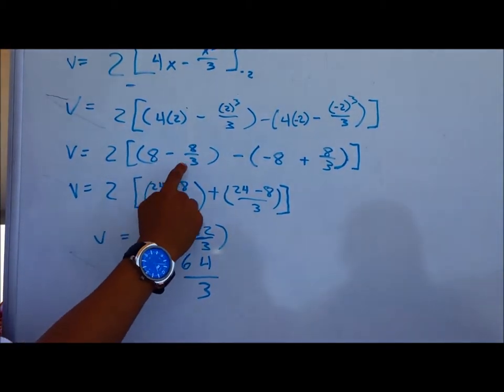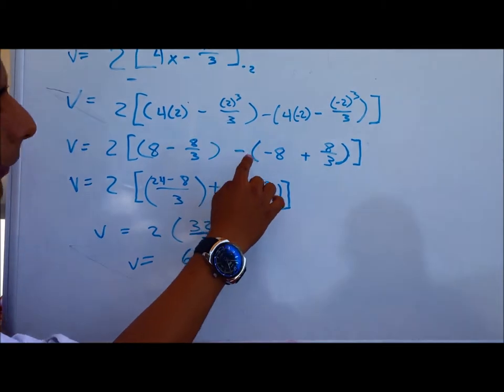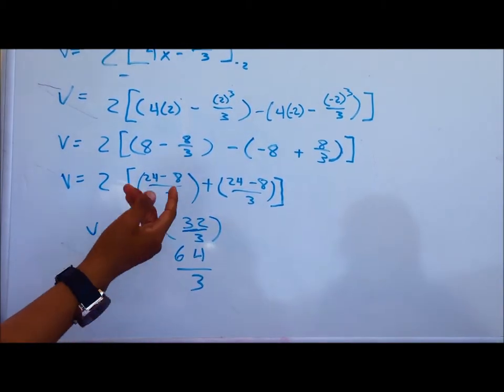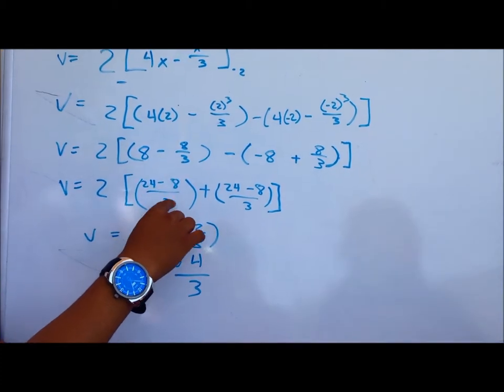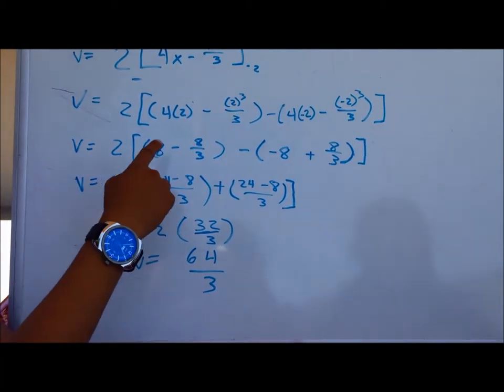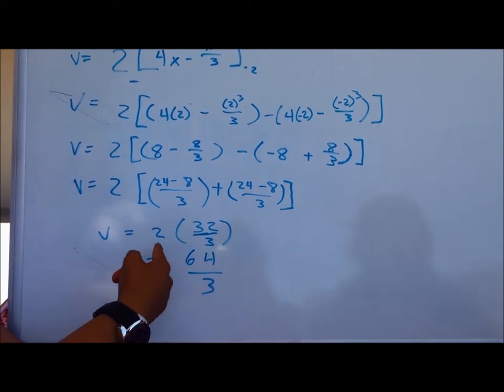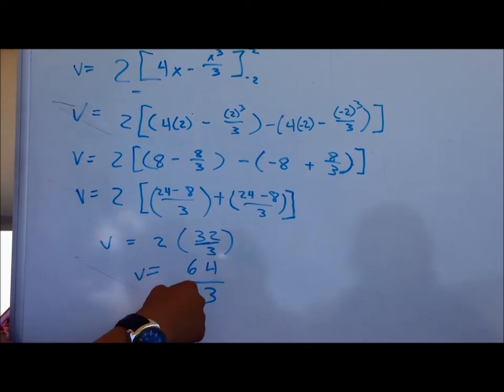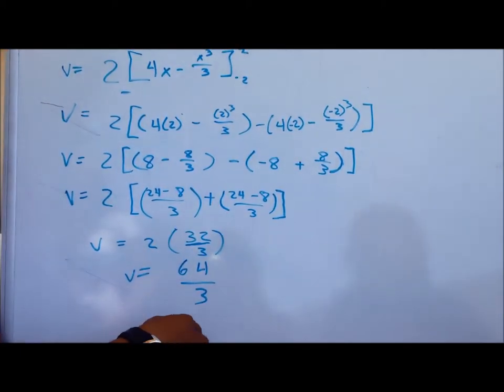You're going to get 8 minus 8 over 3 minus negative 8 plus 8 over 3. You evaluate that, and you get 24 minus 8 over 3 plus 24 minus 8 over 3 times 2, which would equal to 2 times 32 over 3. And your final answer should be 64 over 3.